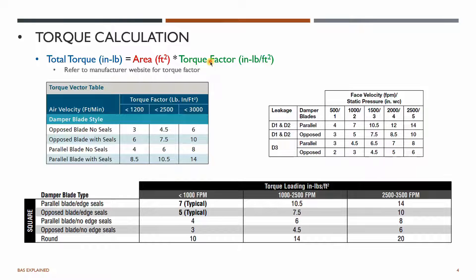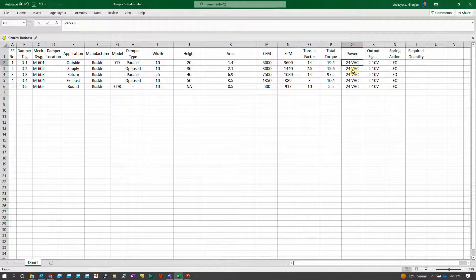You will size your actuators according to that torque which is calculated. Usually the actuators will be sized in this way and you'll see different sizing of actuator sizes available in the market which can vary from 20 inch lbs to probably 175 inch lbs or more than that. You can size that based on your calculation.